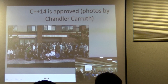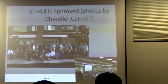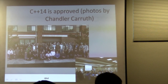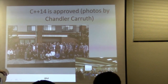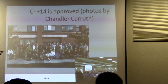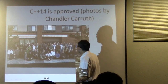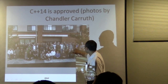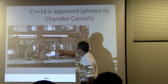This was the approval photo from Issaquah, taken by Chandler. I think five of the seven national bodies have their hands up here voting. Let me see if I can recognize who's in this room from the photo — Gabby's hat, there's someone in the left second row. And there's me, of course.